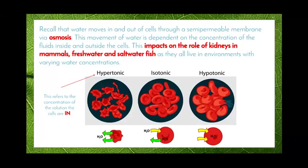In this picture, you will see three different types of solutions with blood cells placed inside them. The names for each solution refer to the solution the cells are placed in. In the first image, we have red blood cells in a hypertonic solution, meaning there is more water inside the cells than outside. There is a higher solute concentration in the fluid surrounding the cells, so water is constantly leaving the cells trying to balance concentrations, and the cells end up shriveling.